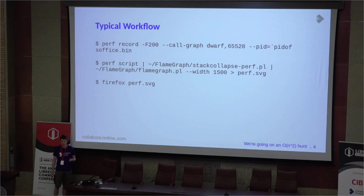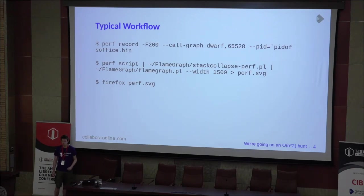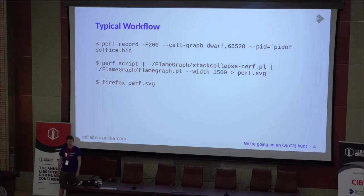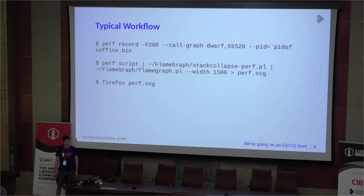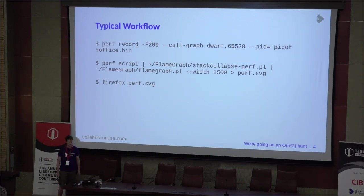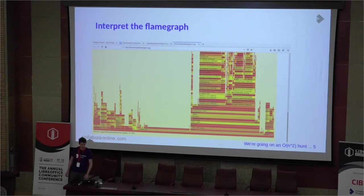We need dwarf because Perf, by default, tries to use LBR recording for its stacks, and we don't generate good LBR data. We need to tell it to use the maximum buffer size, which is 64k, because LibreOffice generates some very deep stacks. The default buffer size for capturing stacks is around 16k, and that's nowhere near close enough to capture our stacks. After that we run Brendan Gregg's brilliant Flamegraph program, and that generates a lovely SVG.